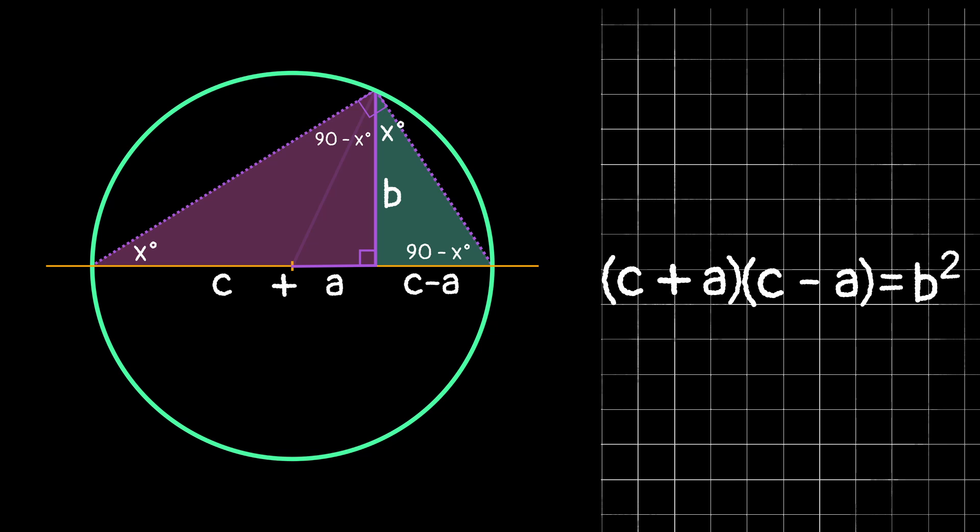You can multiply these out using FOIL, or if you think back to the difference of two squares, it'll give you a little shortcut there. It leaves us with c squared minus a squared equals b squared. Add a squared to both sides, and we get c squared equals a squared plus b squared, or we can rewrite that the way we're more familiar with, a squared plus b squared equals c squared.